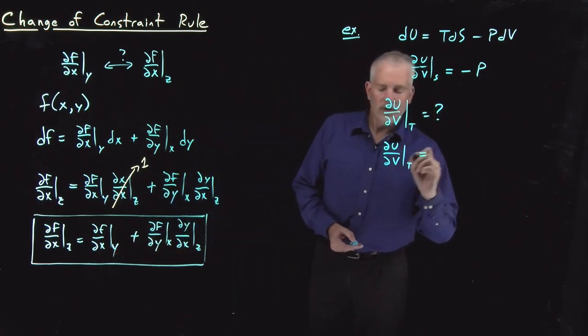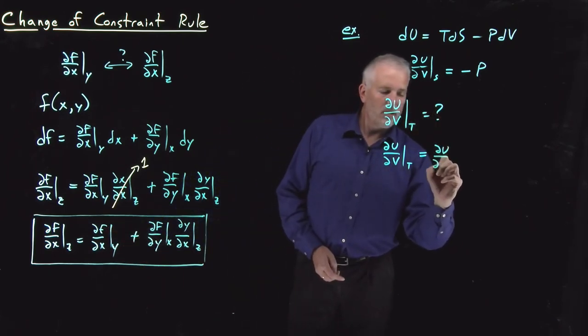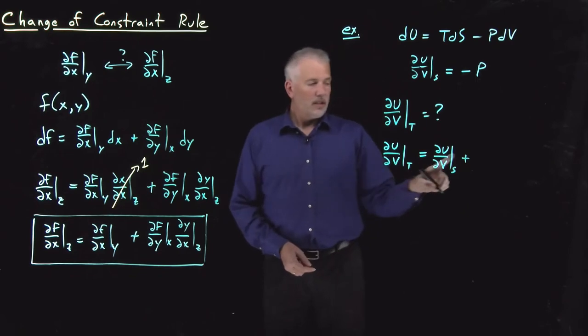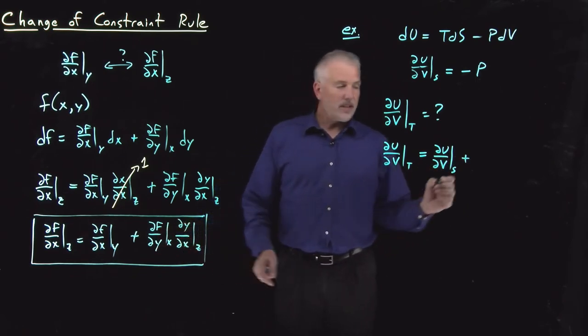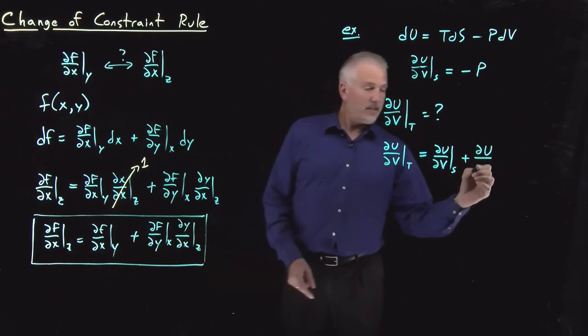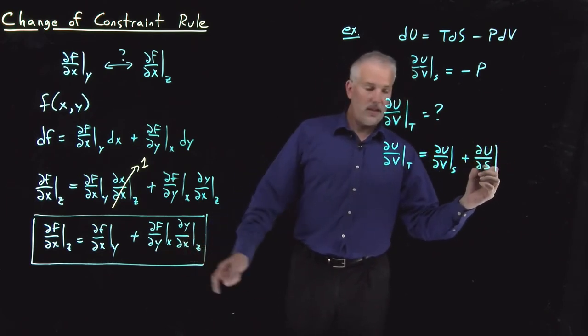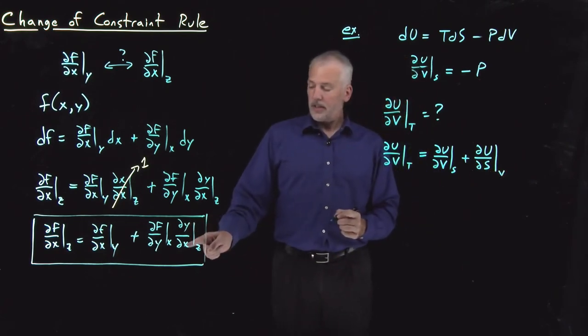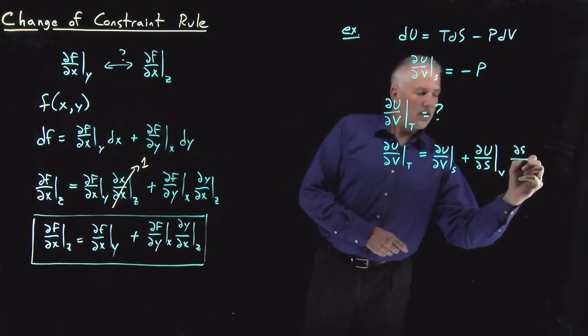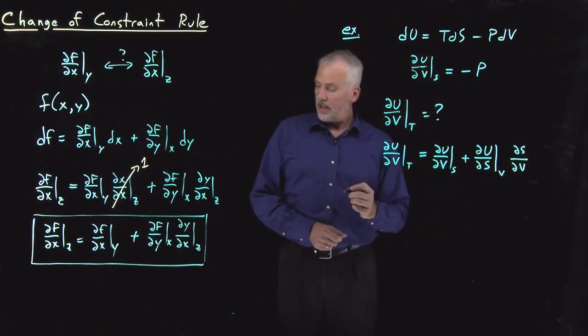So doing that nice and carefully so I don't make a mistake. ∂f/∂x at constant y, the one we already know about, that's ∂u/∂V at constant S. So now I'm going to need ∂f/∂y at constant x, so that's derivative of f, which we're calling the internal energy. y is the entropy, x is the volume. And now dy/dx at constant z, y is entropy, x is volume, and z is temperature.